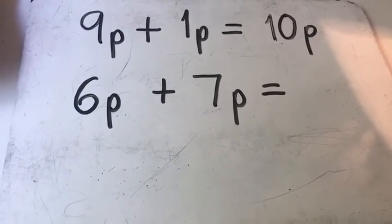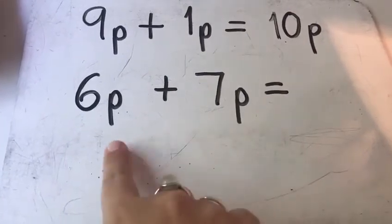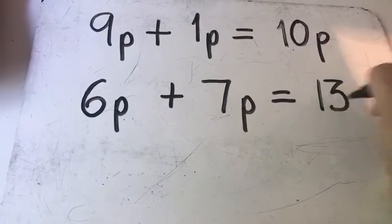So I'm doing 10 plus 3. I've bridged to 10 and I'm adding the remaining 3 which is 13p.